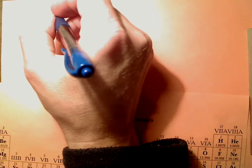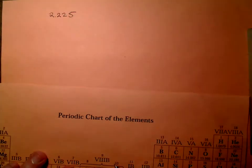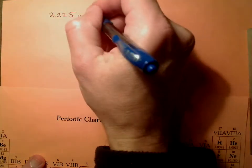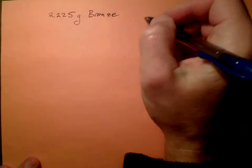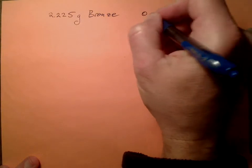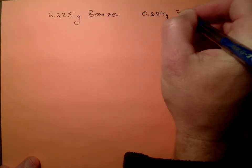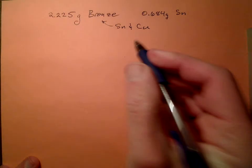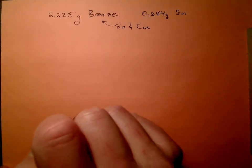So if we look at this, we know we have 2.225 grams of bronze. And of that 2.225 grams of bronze, we have 0.684 grams of tin. So remember bronze is tin and copper. And we're looking for atoms of copper.